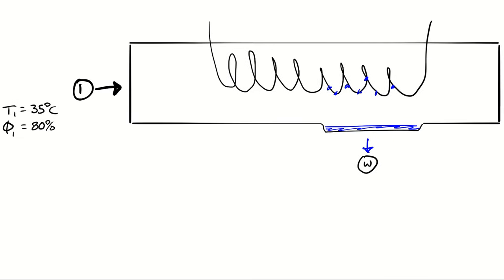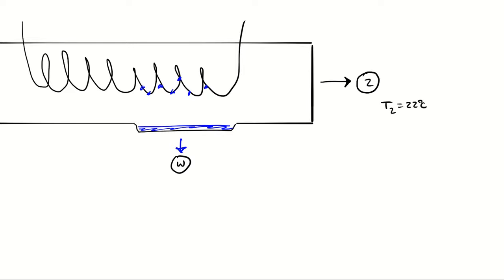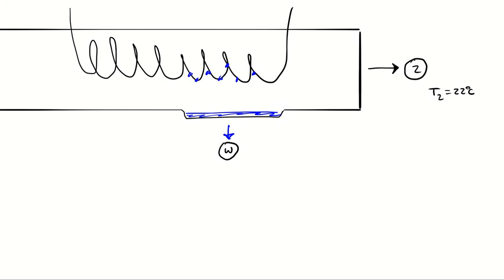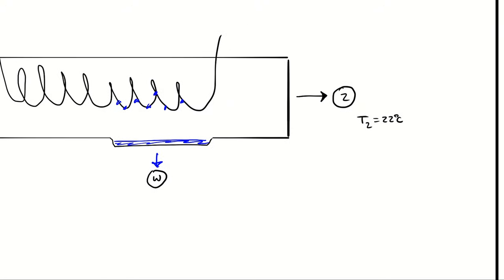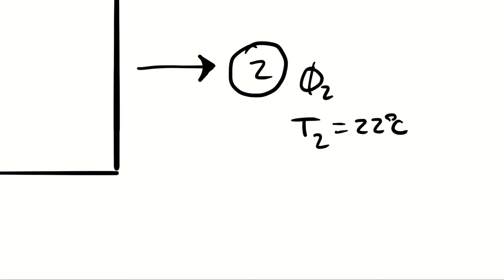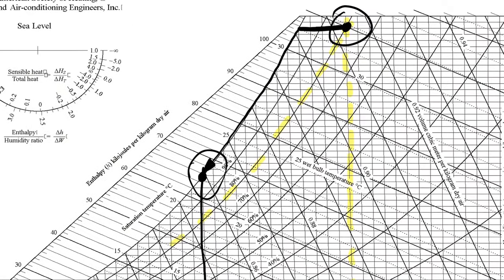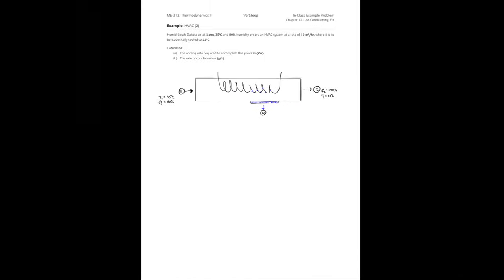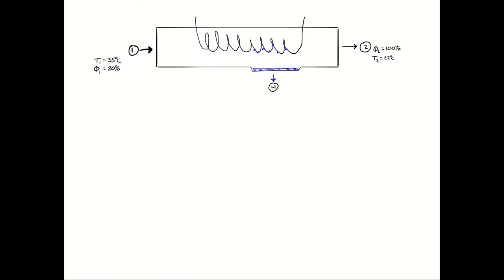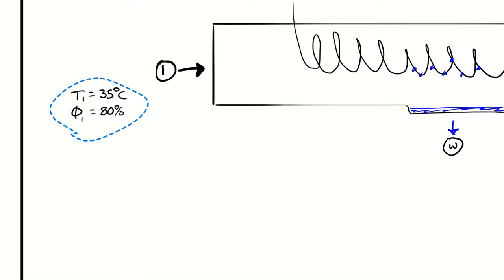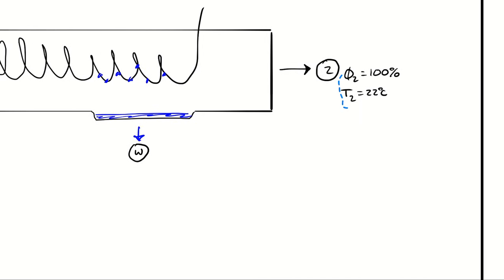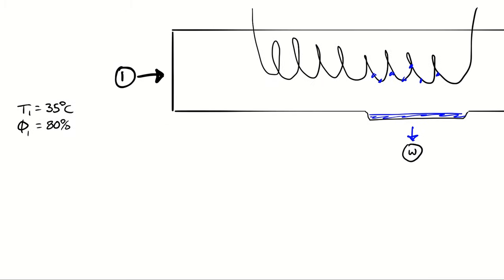I have atmospheric air entering as state 1, atmospheric air exiting as state 2, and state W is the mass flow rate of condensation we're looking for. At state 2, the relative humidity has to be 100% because I'm cooling while condensing water out of the air. Since I'm okay with chart lookups, I can use these two independent intensive psychrometric properties to look up any other property I need.